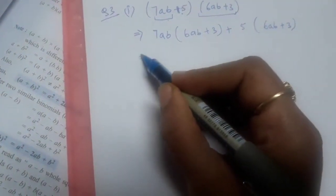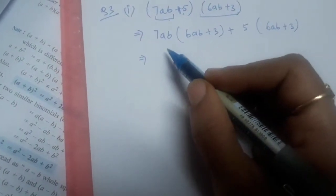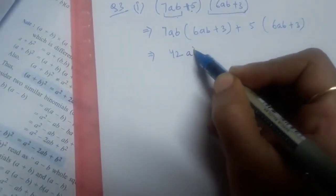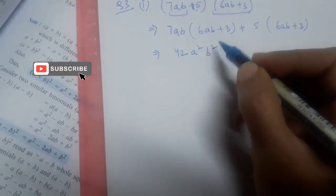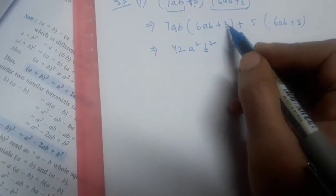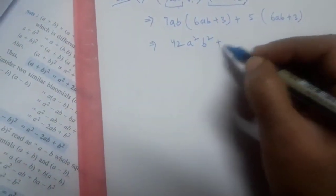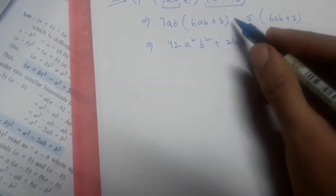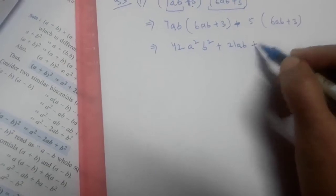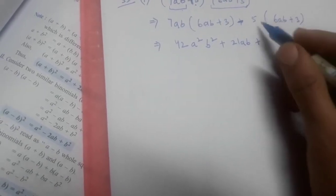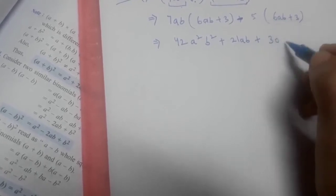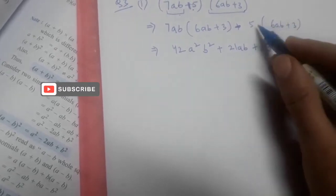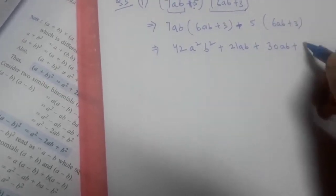In our next step, 7ab multiplied by 6ab: 7 × 6 = 42, a × a = a², b × b = b², giving 42a²b². Then 7ab multiplied by 3: 7 × 3 = 21ab. Now the second term: 5 multiplied by 6ab, 5 × 6 = 30ab, and since no variables are with 5, then 5 × 3 = 15.